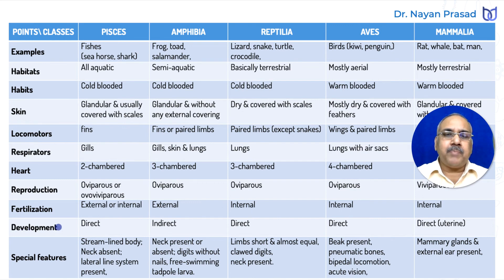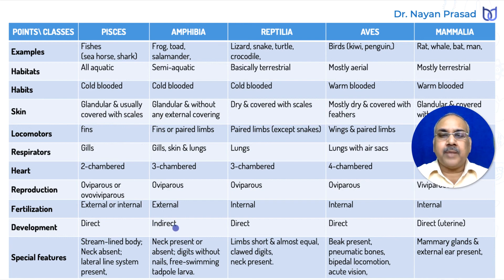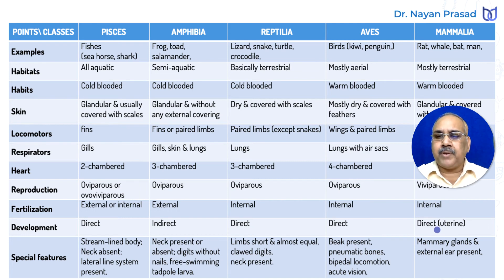When we talk about development: in fishes, development is direct, meaning no free-living larval stage. In amphibians, development is indirect, with a free-living larval stage. In all other groups — reptiles, birds, and mammals — development is direct. In the case of mammals, we can say development is uterine, meaning it takes place inside the uterus of the female.